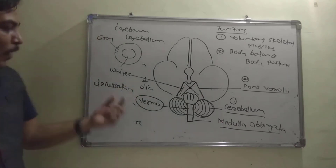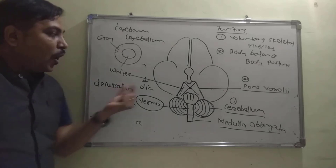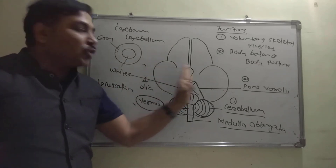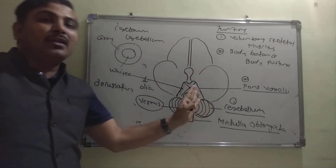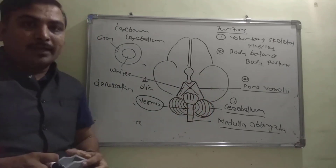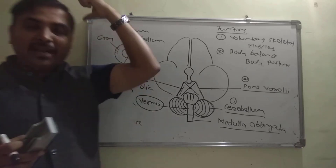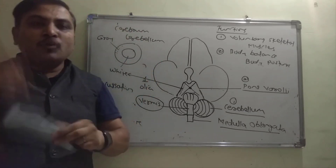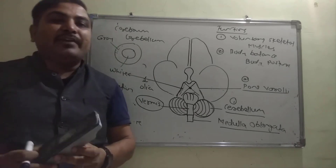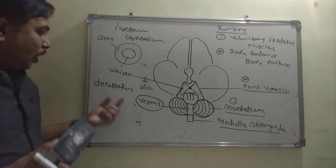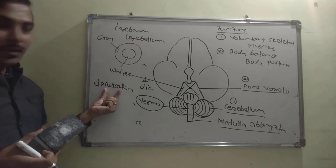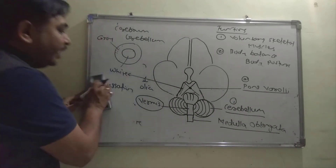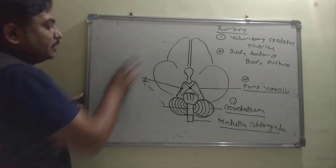Because of this decussation, the right side of the brain controls the activities of the left side of the body, and the left side of the brain controls the right side of the body — the control is contralateral.